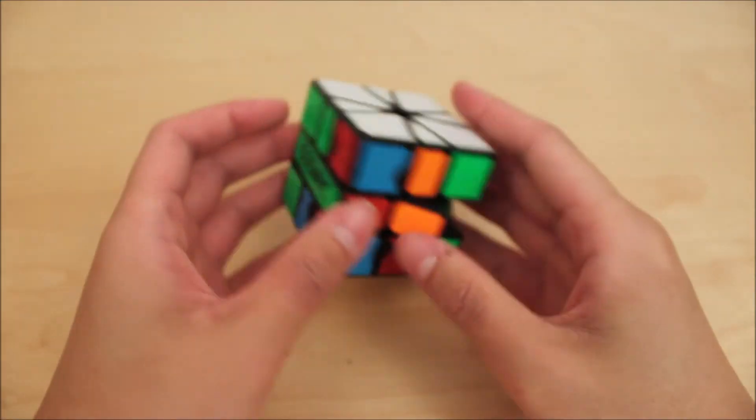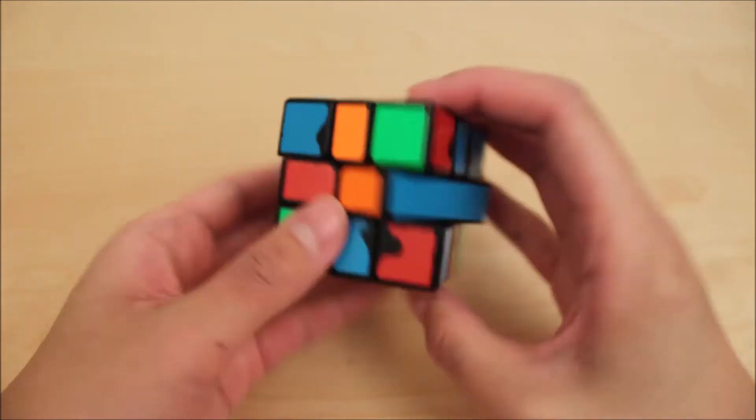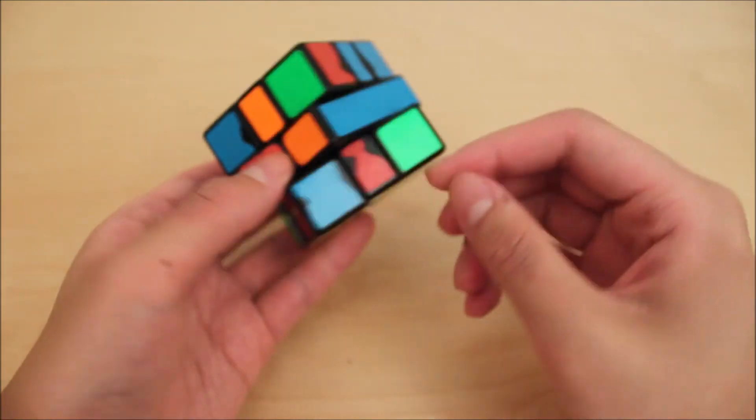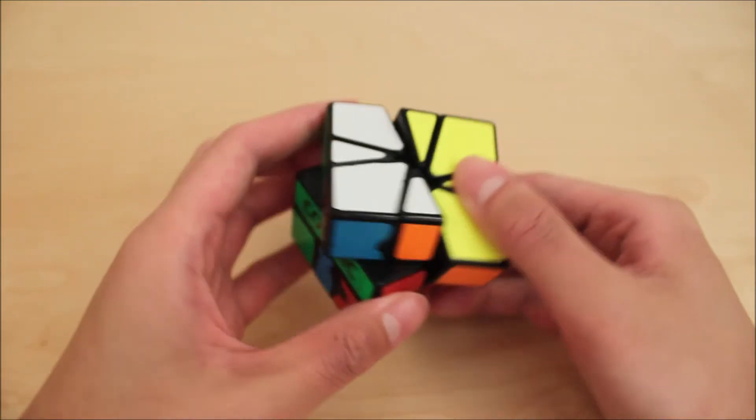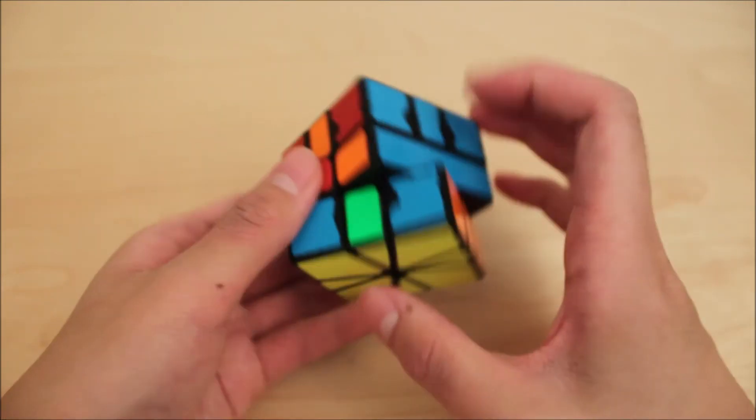So this works with any combination of T-perms and F-perms. So, for example, this one, we got F on bottom, T on top, we can just do PJPJ. Move the bottom layer, and we can get up-up.